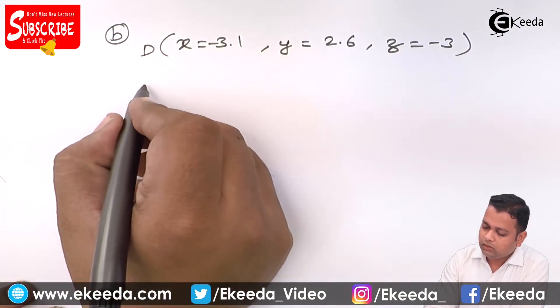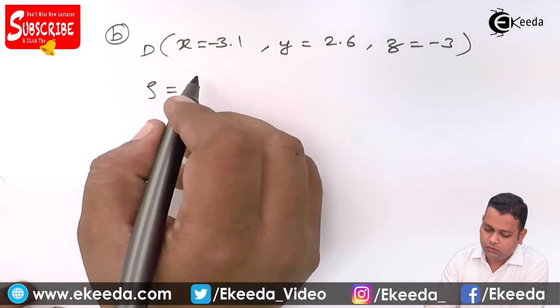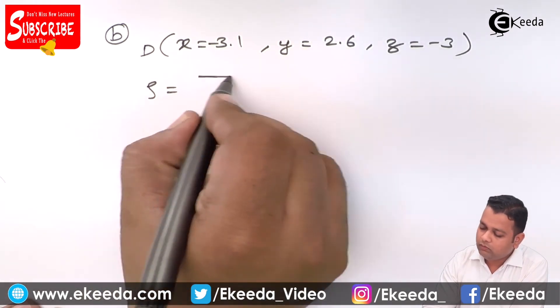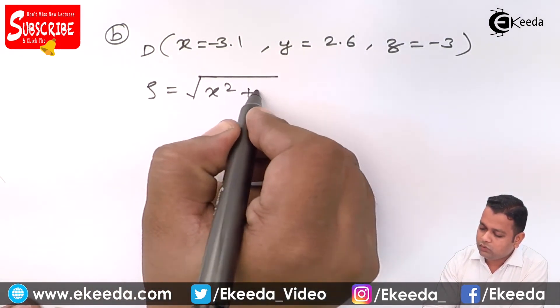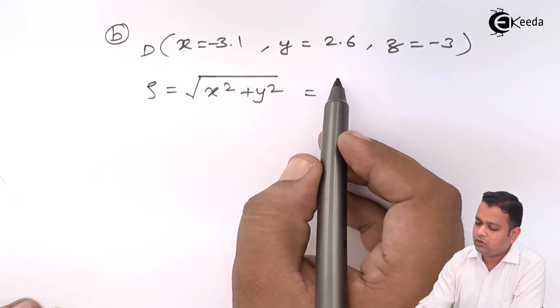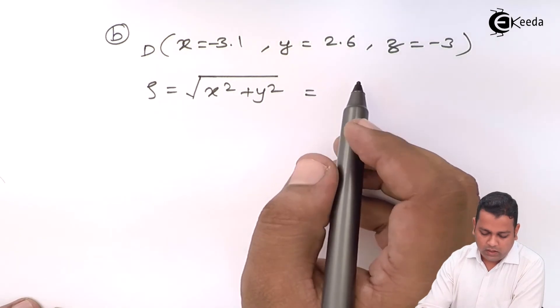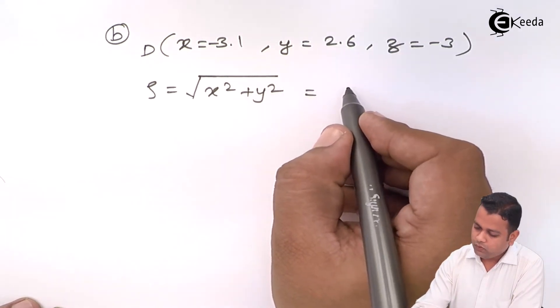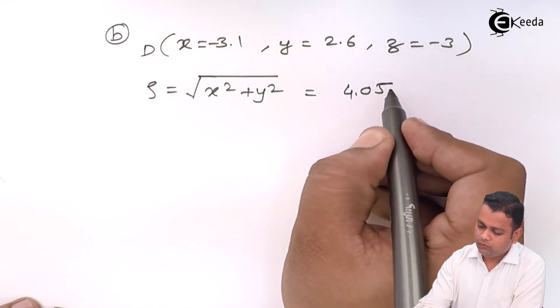So, here we are supposed to calculate rho. Rho is given by under root x square plus y square. So, if we put x is equal to minus 3.1, y is equal to 2.6, we get the answer rho is equal to 4.05.